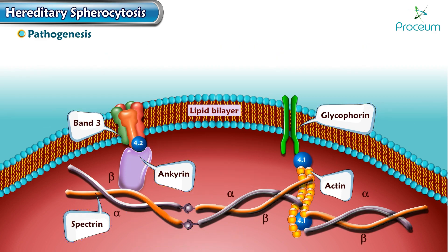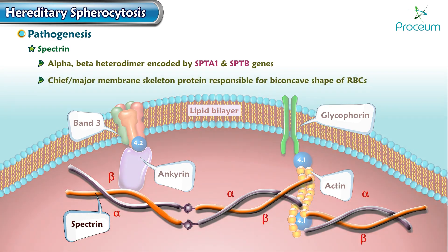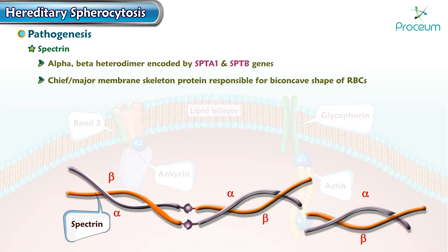Spectrin forms an alpha-beta heterodimer, encoded by the SPTA1 and SPTB genes respectively. It is the chief membrane skeleton protein responsible for the biconcave shape of RBCs. It consists of long, flexible multiple alpha and beta heterodimers.